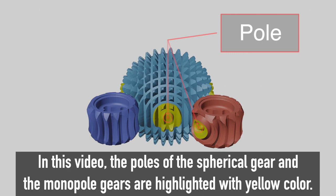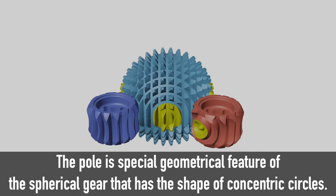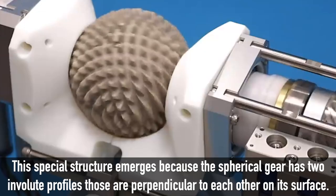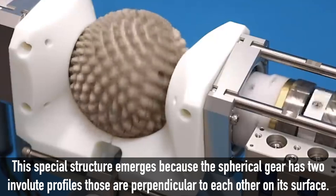In this video, the poles of the spherical gear and the monopole gears are highlighted with yellow color. The pole is a special geometrical feature of the spherical gear that has the shape of concentric circles.